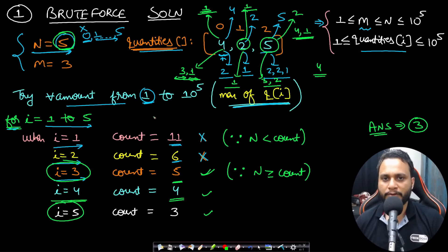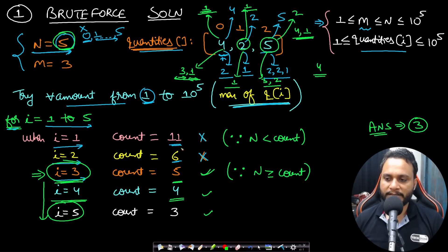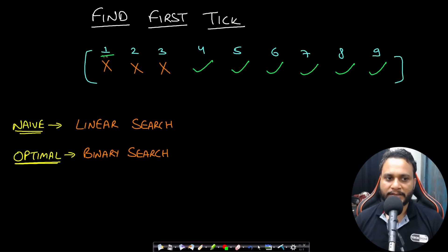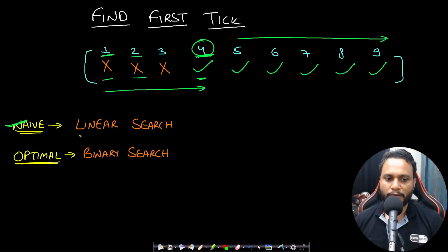Once a certain chunk size works, any larger chunk size will always work too. But smaller chunk sizes may or may not work. The first chunk size (from left to right) that satisfies the assignment is the answer — it is the minimum value. The naive approach is linear search from 1 to max(quantities) to find the first working chunk size.